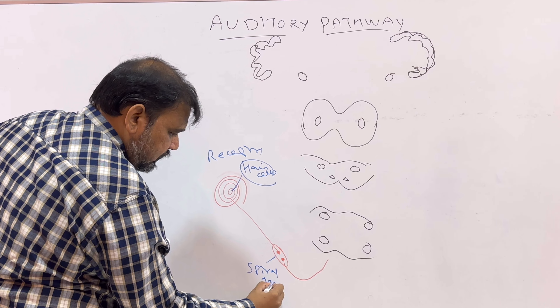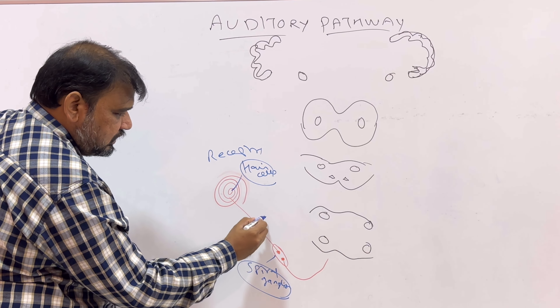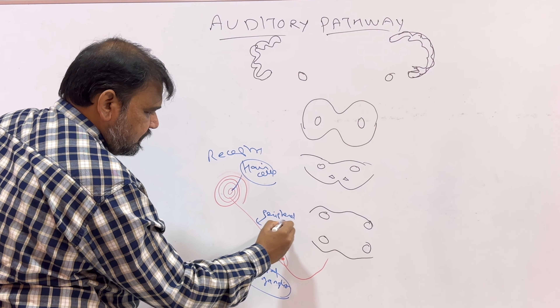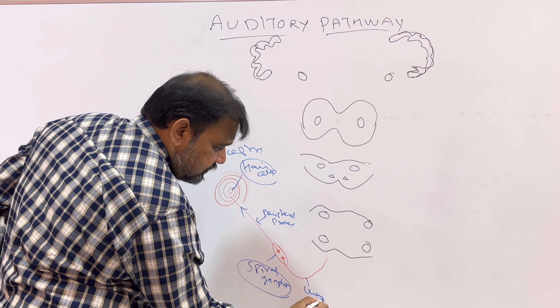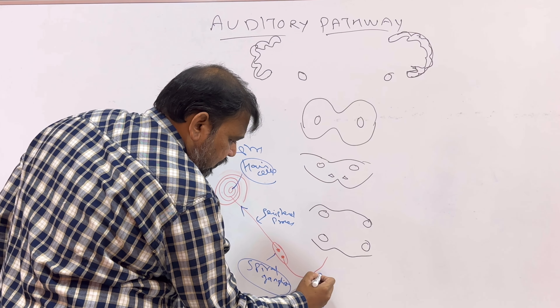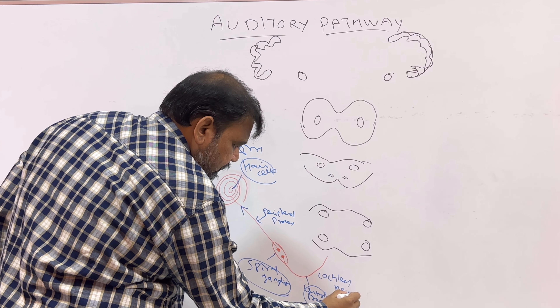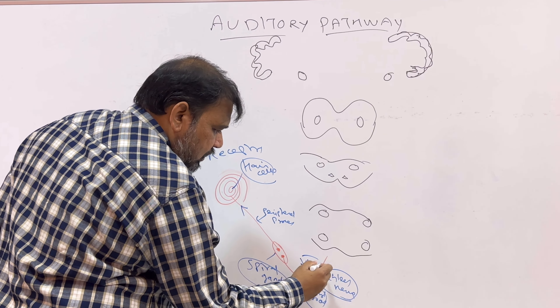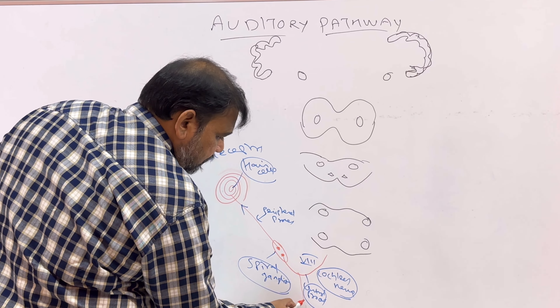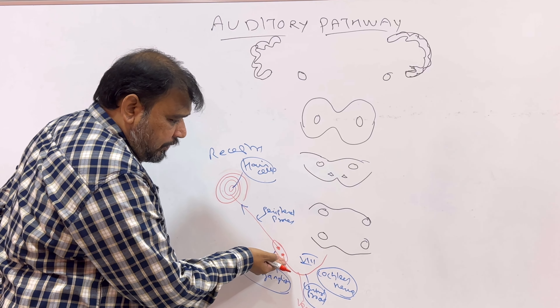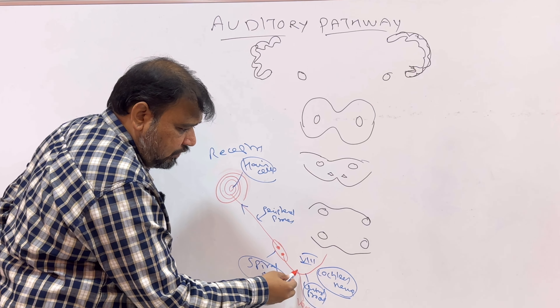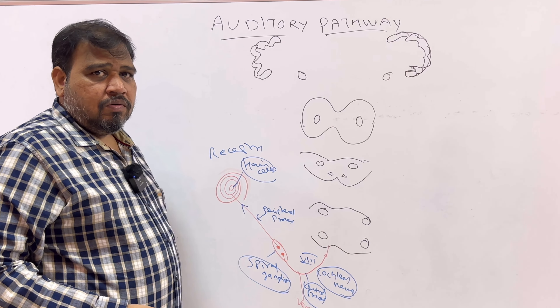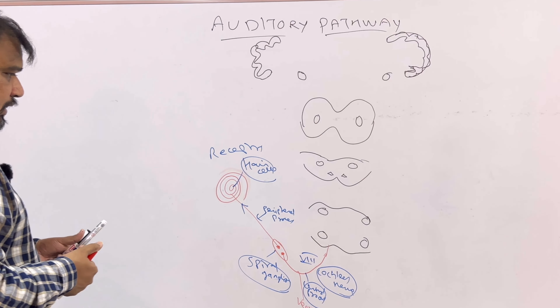All ascending sensory pathways start with receptors. Here, the organ of Corti hair cells — please note — connect to the spiral ganglion, which is a bipolar neuron. The peripheral process of the spiral ganglion is present in the hair cells. The central process comes as the 8th nerve, or more specifically the cochlear nerve. The 8th nerve is the vestibulocochlear nerve, and I am taking the cochlear division as I am discussing the auditory pathway.